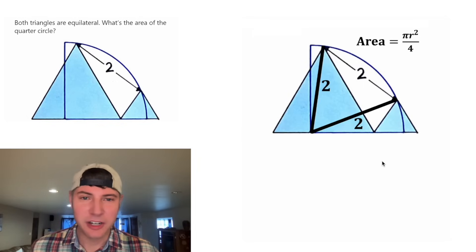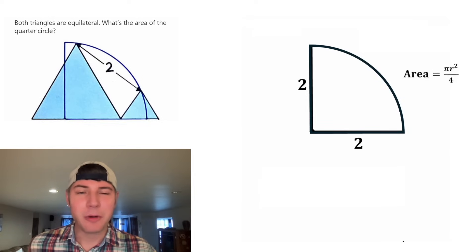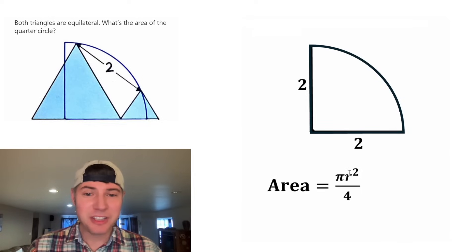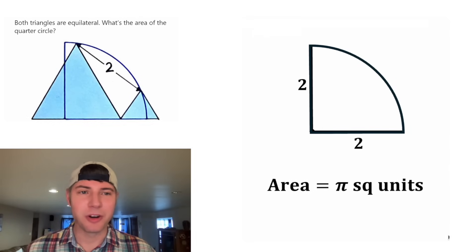So now let's bring back our original figure and let's focus on the quarter circle. The radius of this quarter circle is equal to two. And now we're ready to use our area formula. In the place of the radius, let's plug in two. Two squared is equal to four. And these fours will cancel each other out. So the area is equal to pi square units.